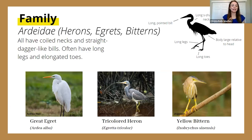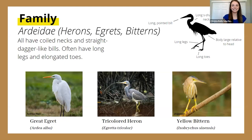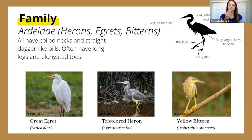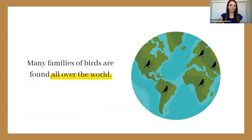The great egret, the tricolored heron, and the yellow bittern all have a coiled or S-shaped neck, a long dagger-like bill, and longer legs relative to their body size. These Ardeidae birds are very distinct from sparrows, and the bill shape alone gives a lot of information about what kind of bird you might be seeing — really benefiting that narrowing-down process toward a species-level identification.